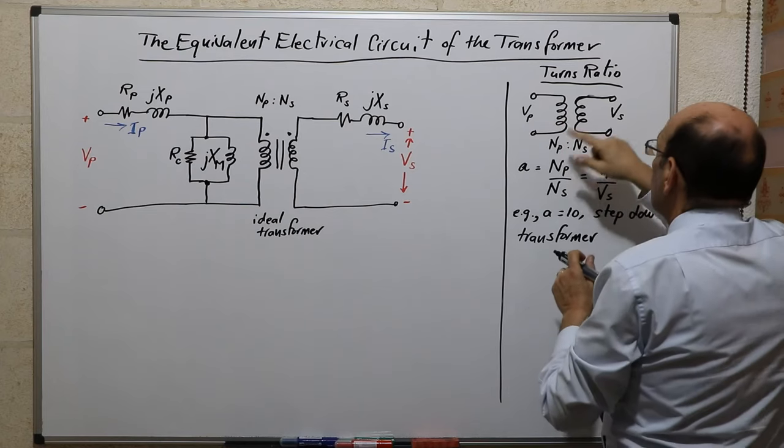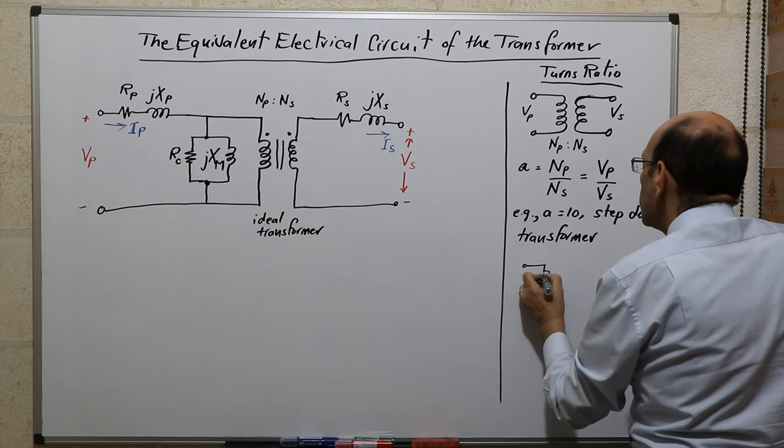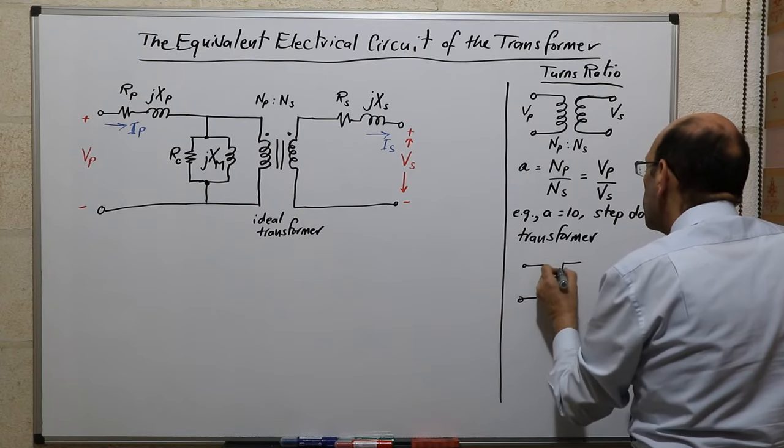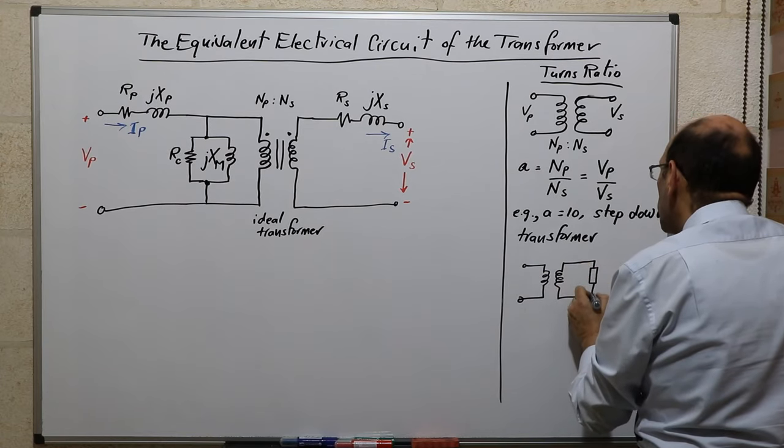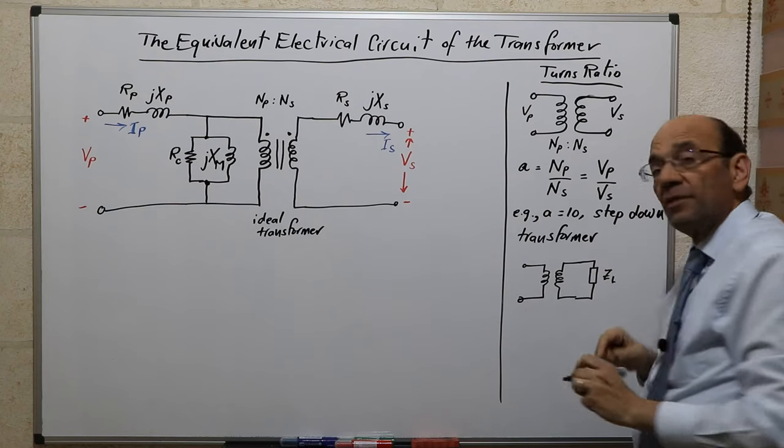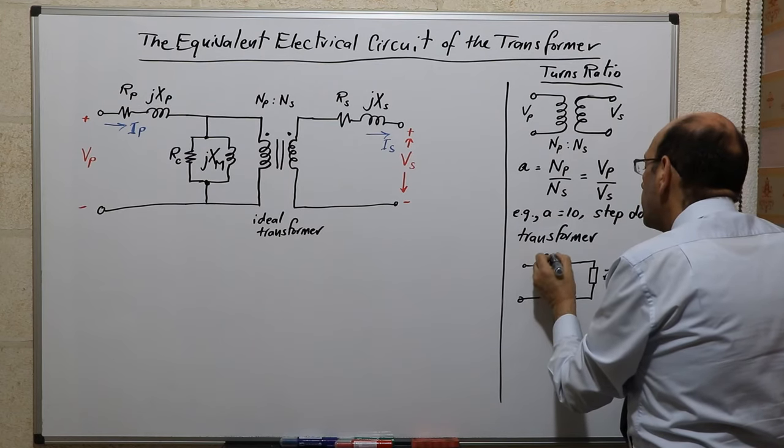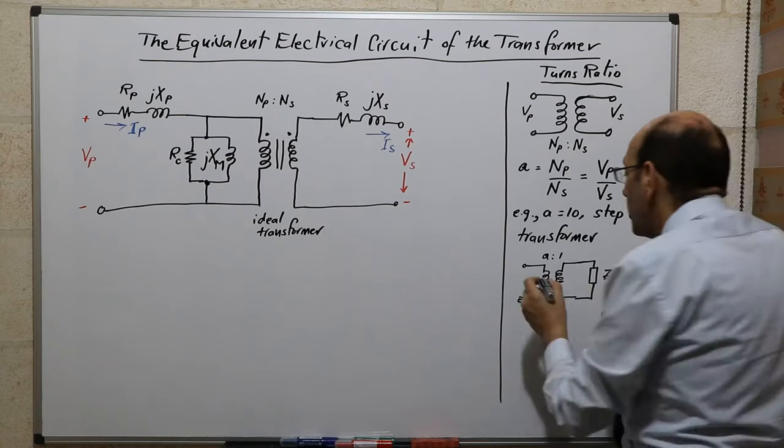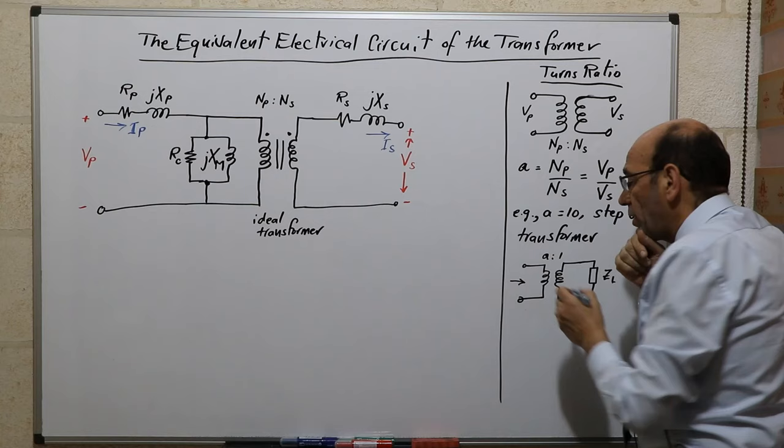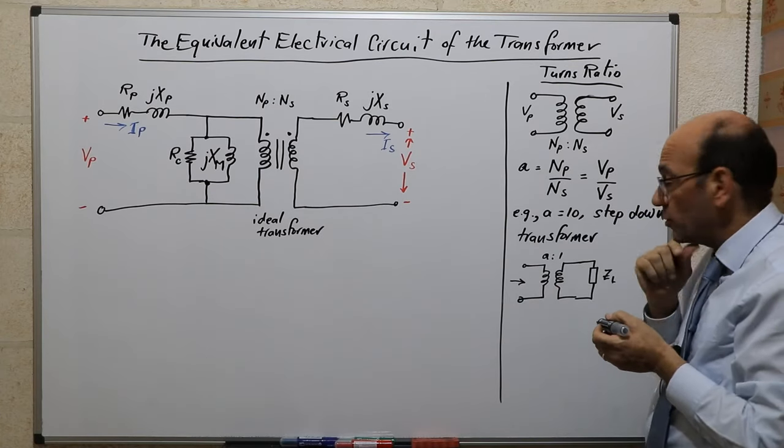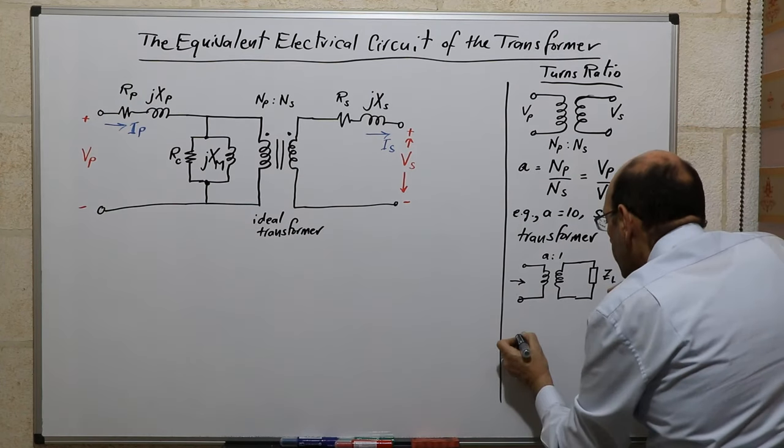Let us assume we wanted to try to represent this transformer with a load. If this transformer had a load at the secondary connected to the secondary, and let's assume this was an impedance of Z subscript capital L, meaning it's the impedance of a load. And here we have A to 1, which is the turns ratio. We're asking the question, what would this impedance look like if we want to see it from the primary's point of view?